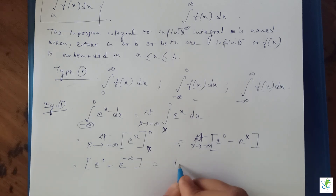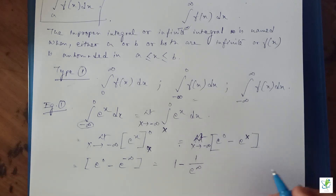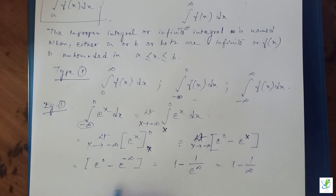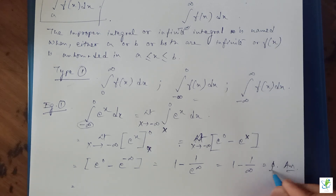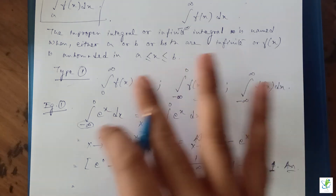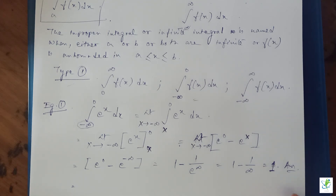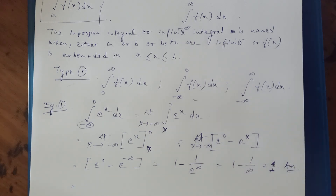Now, e^0 is 1, and e^(minus infinity) equals 1 divided by e^(infinity). Since 1 divided by infinity is 0, we get 1 minus 0, which equals 1. So the answer is 1. In this way we can solve improper integrals of Type 1. I hope this video helps you. If you like the way I teach, please subscribe to my channel and like this video. Thank you and goodbye.